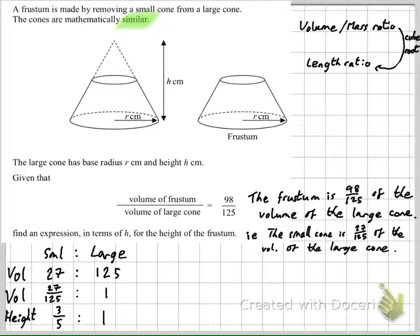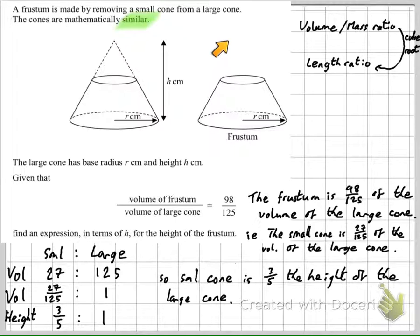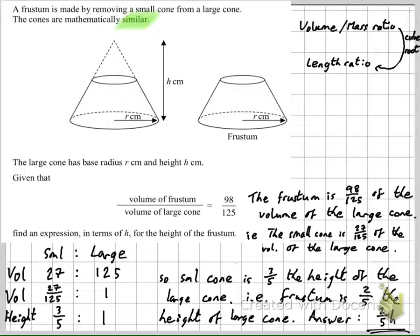Now before we finish, we need to interpret that in a sentence again. In other words, the small cone is 3/5 the height of the large cone. Now read the question. It wants the height of the frustum. So if the small cone is 3/5, so this part that's missing is 3/5 of the whole height, the frustum must be 2/5, and that gives us our answer of 2/5 h.